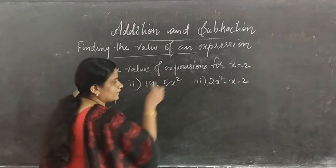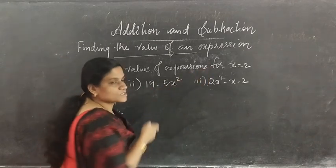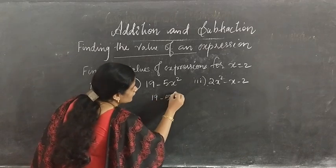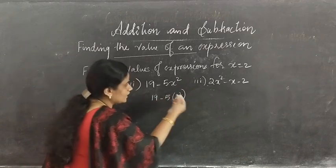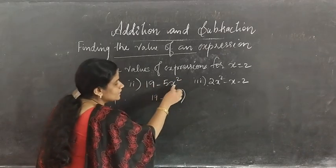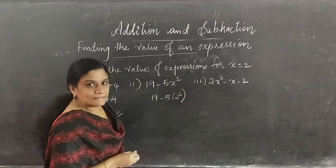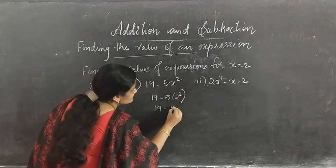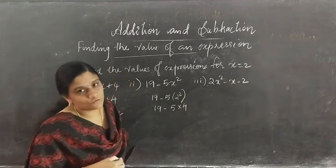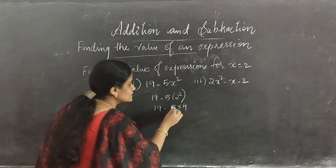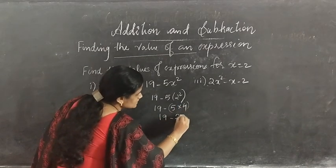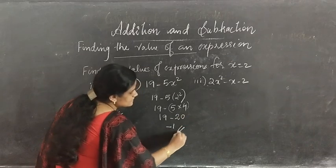Next: x² — in the place of x substitute 2. So 19 minus 5 into 2² equals 19 minus 5 into 4. We do the multiplication first: 5 into 4 is 20. So 19 minus 20 gives negative 1.